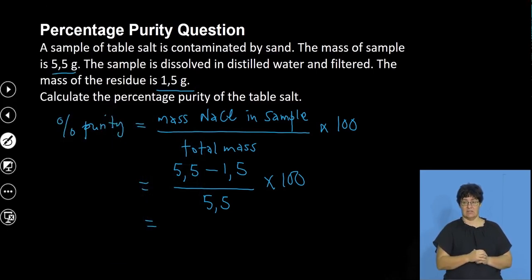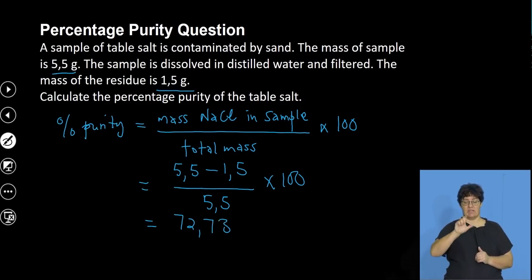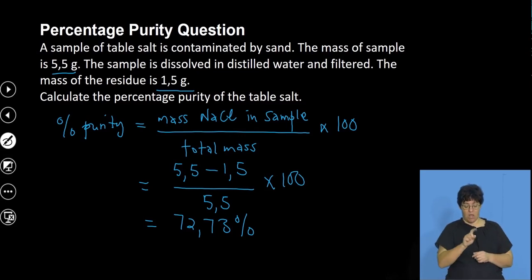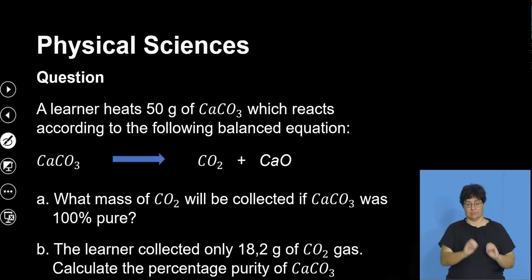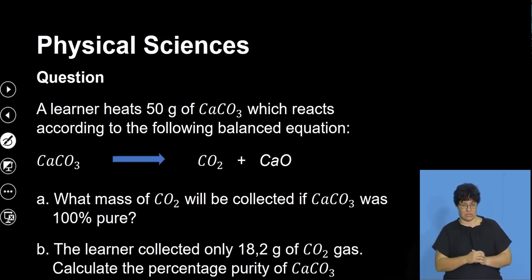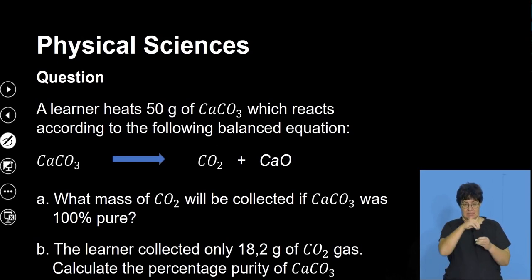The percentage purity of table salt is 72.73%. Always leave your answer to two decimal places unless otherwise specified. Now let's look at a different question, still addressing percentage purity of a substance.